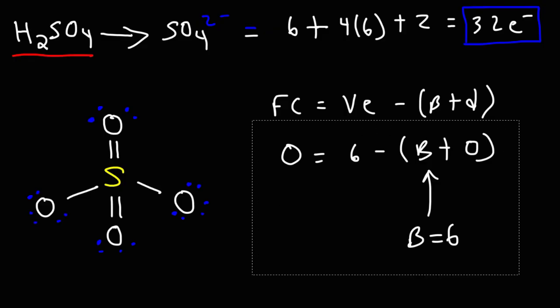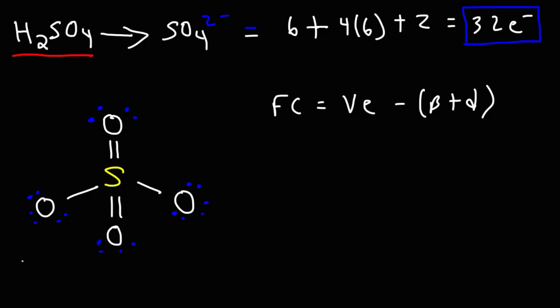The next thing that we need to do is calculate the formal charge on each oxygen atom. So let's start with the double bonded oxygen atoms. Each of those have six valence electrons, they have two bonds, and two lone pairs or four dots. So six minus six is zero. These two are neutral in charge. Anytime oxygen has two bonds, it typically has a neutral charge. But when it has one bond, it usually has a negative charge.